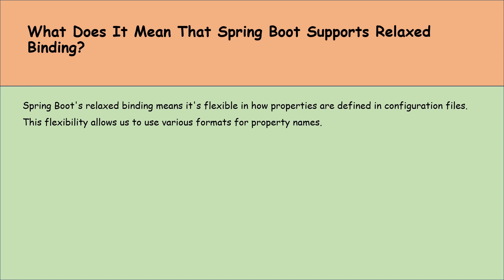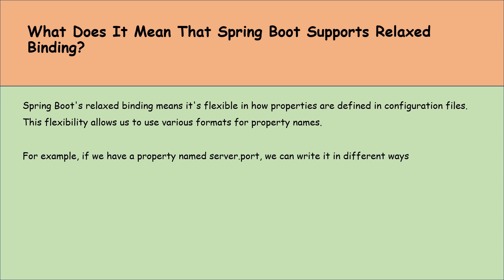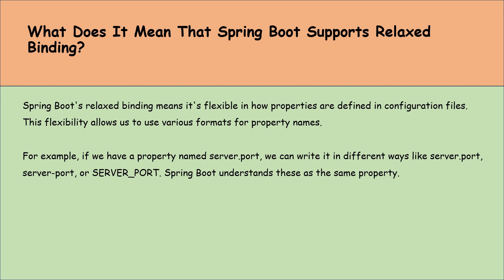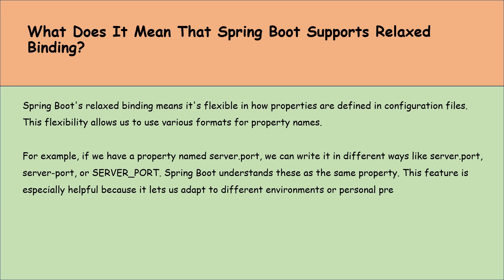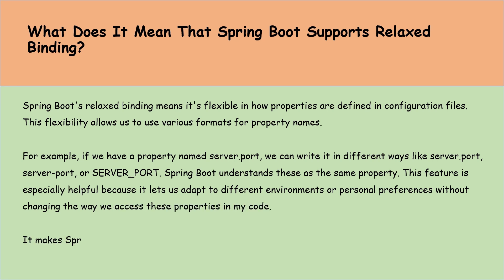For example, if we have a property named server.port, we can write it in different ways like server.port, server-port, or SERVER_PORT. Spring Boot understands these as the same property. This feature is especially helpful because it lets us adapt to different environments or personal preferences without changing how we access these properties in code, making Spring Boot configuration more tolerant to variations and easier to manage.